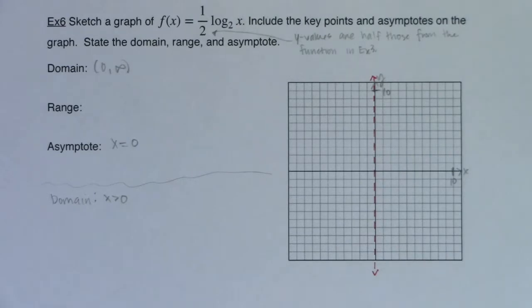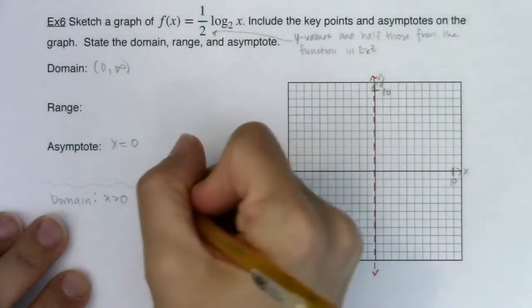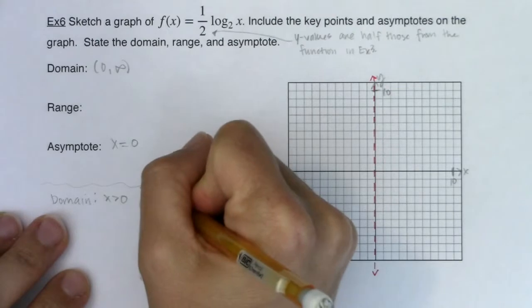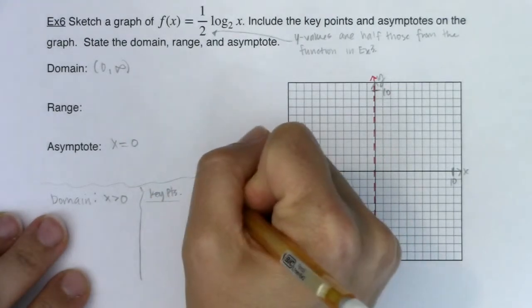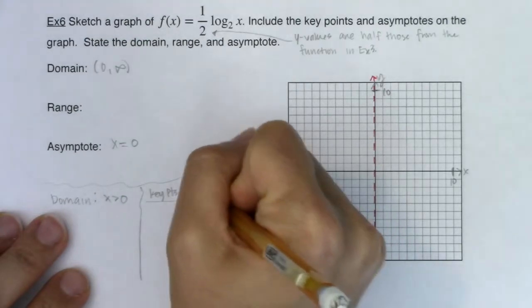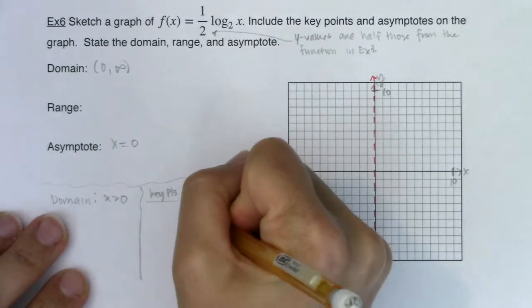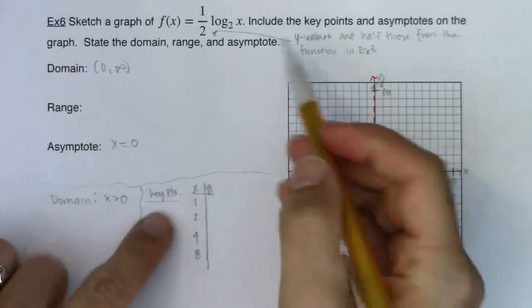So let's get some key points here. If I was going to do key points, again I want to be efficient about what x values I choose. And since I have a base of 2, I'm going to pick powers of 2. So I'm going to go 1, 2, 4, 8. And let's see what we get here.